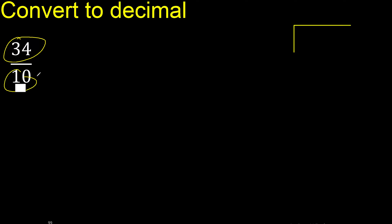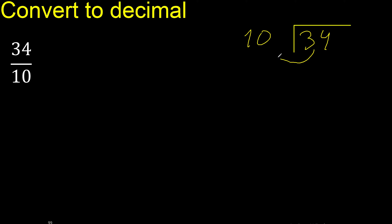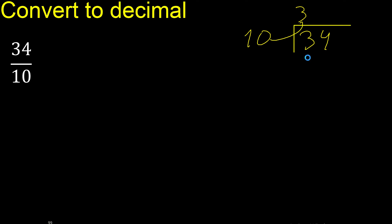34 divided by 10. 34 is not less than 10, therefore find which number multiplied by 10 is nearest to 34 but not greater. 10 multiplied by 4 is 40, which is greater, therefore 10 multiplied by 3 is 30. Subtract: 34 minus 30 equals 4. There is no number that comes down.